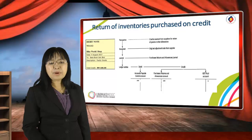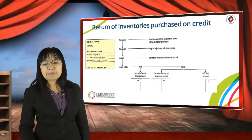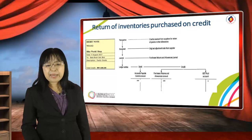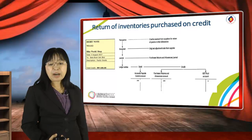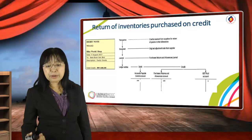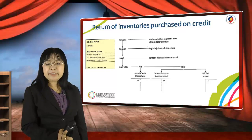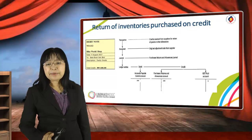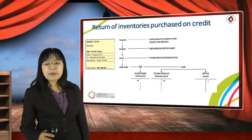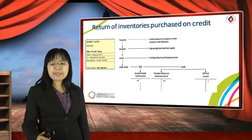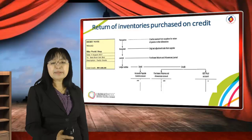Let's see the example of this transaction. RM106 worth of goods is returned to the supplier. In the ledger account, the debit transaction will be accounts payable — the accounts payable control account will be decreased by entering a debit of RM106. On the credit side, there are two credit entries: the purchases account will be decreased by RM100, and the GST paid account will be credited by RM6. So the two credits of RM100 and RM6, totalling RM106, equal the debit in accounts payable.